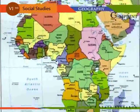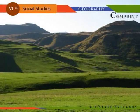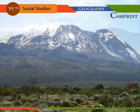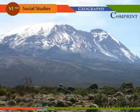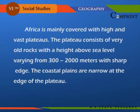In the extreme northwest of Africa, we have block mountains and folded mountains. In the states of Morocco, Algeria, and Tunisia, they are close to the Mediterranean coast. Africa is mainly covered with high and vast plateaus consisting of very old rocks, with heights above sea level varying from 300 to 2000 meters with sharp edges. The coastal plains are narrow at the edges of the plateau.